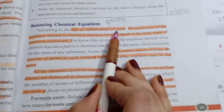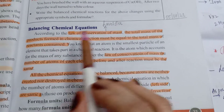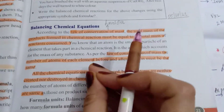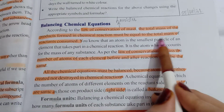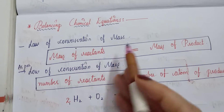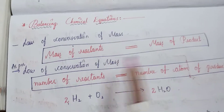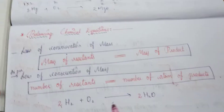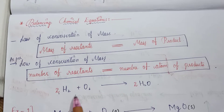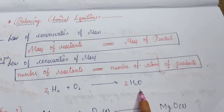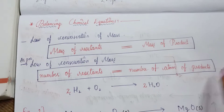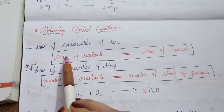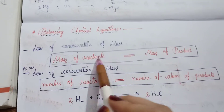According to the Law of Conservation of Mass — given by the scientist Lavoisier — the total number of products formed in a chemical reaction must be equal to the total number of reactants consumed. Simply put, the mass of reactants must equal the mass of products. The number of atoms on the left-hand side (reactants) must equal the number of atoms on the right-hand side (products).